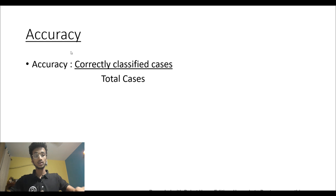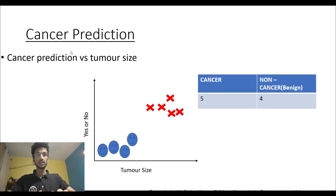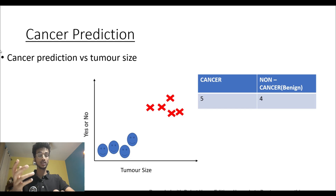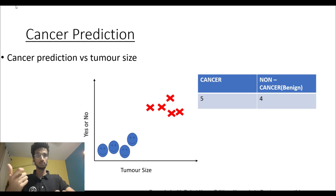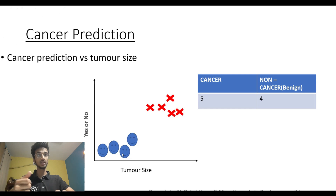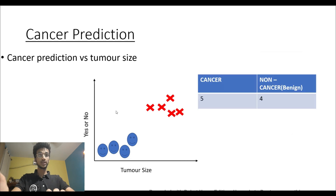Look at this case — we're predicting if a particular tumor is cancerous or not based on tumor size. You have tumor size on the x-axis and results on the y-axis. The blue smileys are non-cancerous tumor cells, also called benign, and the red crosses are cancerous. This is a pretty good dataset.